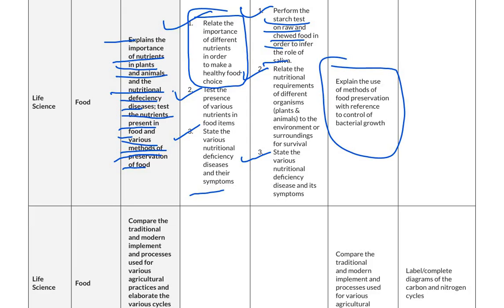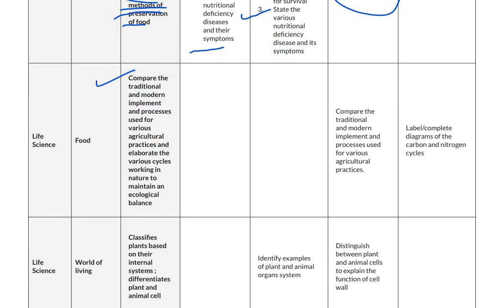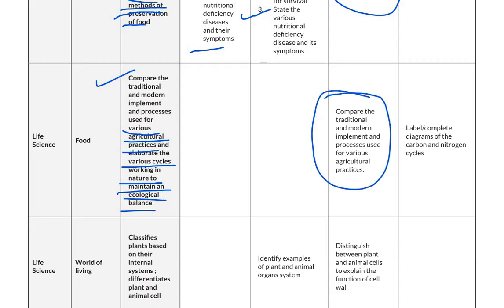For basic level, questions will involve performing the starch test on raw and chewed food to infer the role of saliva, and relating the nutritional requirements of different organisms. For proficient level, students have to explain the use of methods of food preservation. The next competency is to compare traditional and modern implements and processes used for various agricultural practices, and elaborate the various cycles working in nature to maintain ecological balance. For proficient level, students compare traditional and modern agricultural practices; for advanced level, they label or complete diagrams of carbon and nitrogen cycles.